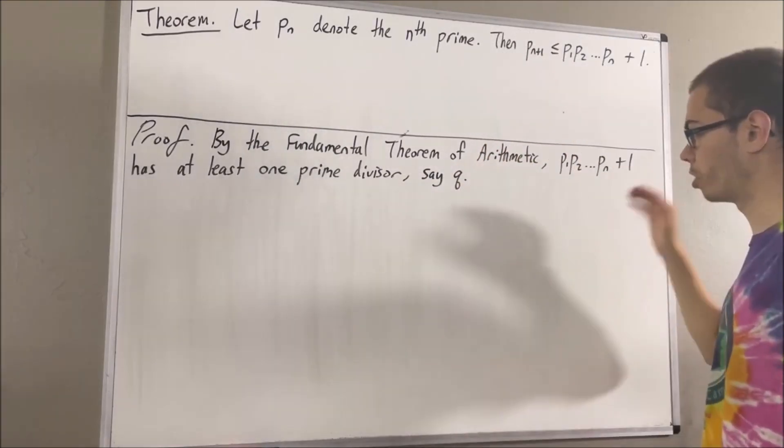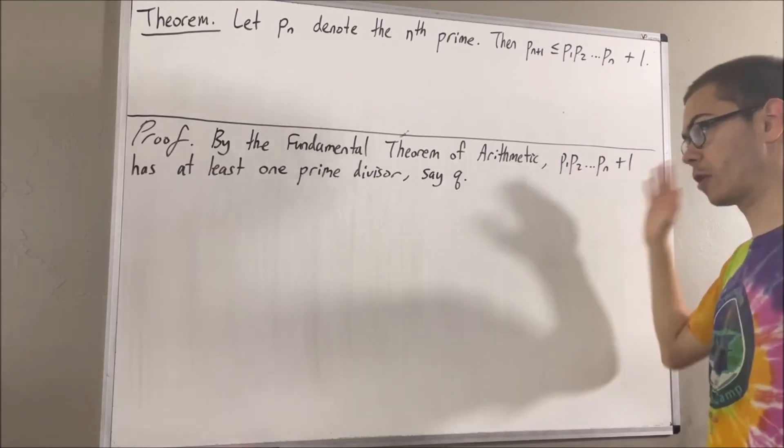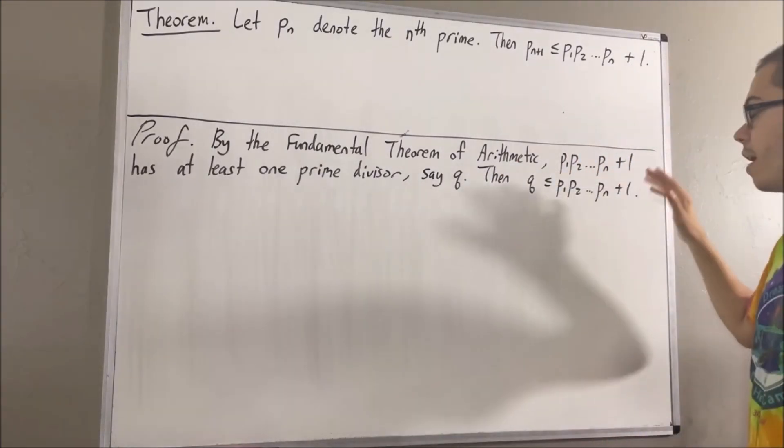Now, we know that every divisor of this quantity is less than or equal to this quantity. Therefore, q must be less than or equal to this quantity.